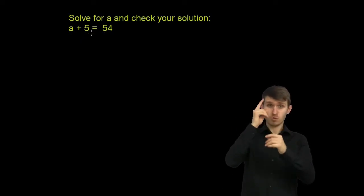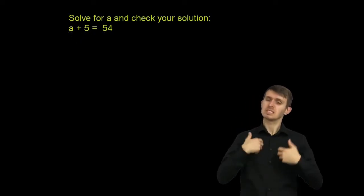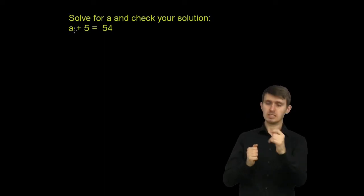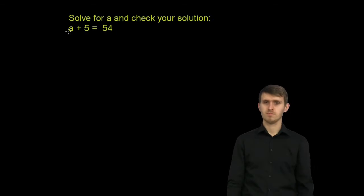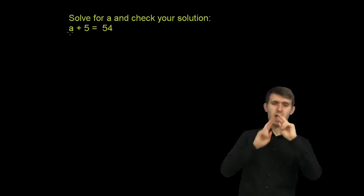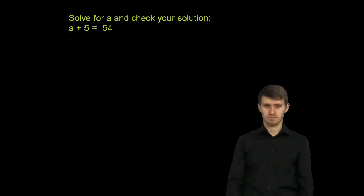So in general, whenever you have an equation like this, we want to have the variable. We want this a all by itself on one side of the equation. We want to isolate it. It's already on the left hand side, so let's try to get rid of everything else on the left hand side.